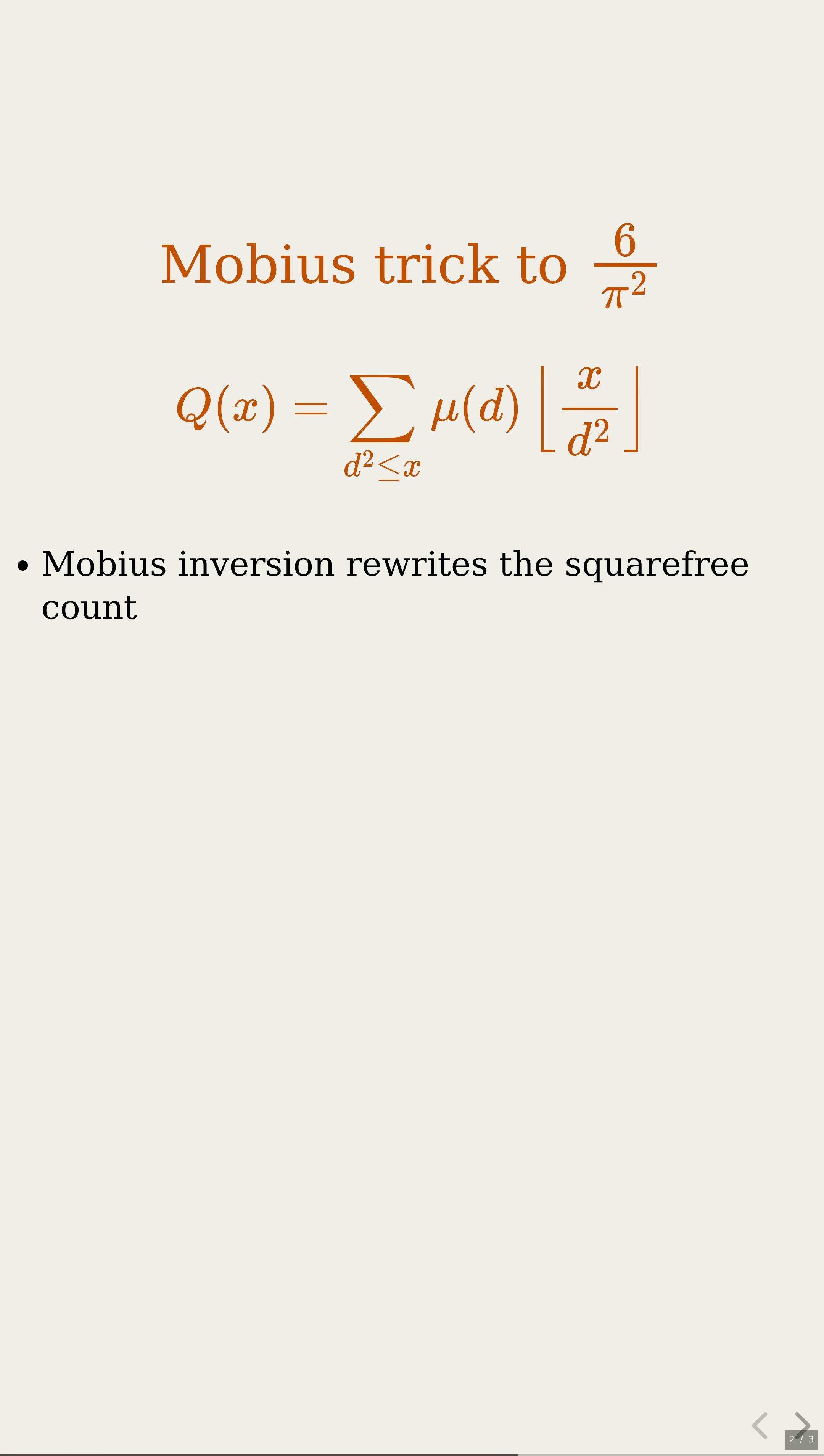Mobius inversion turns the count of square-free numbers up to x into a sum over squares in the denominator. Each square d squared gives a floor of x divided by d squared in that sum. Divide by x and let x grow.